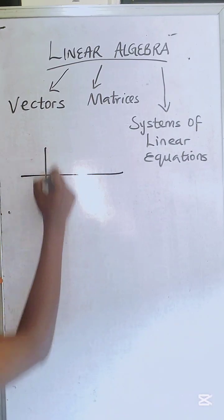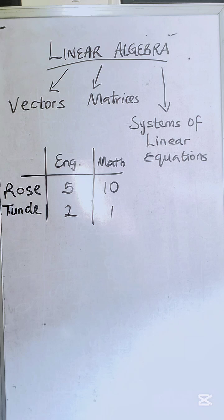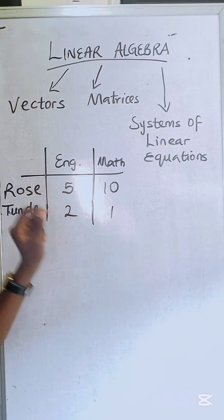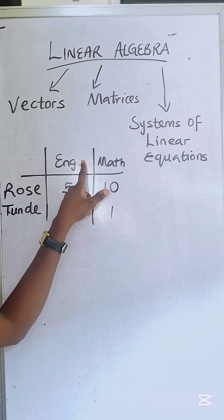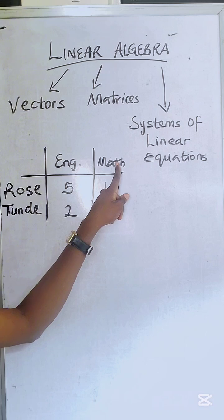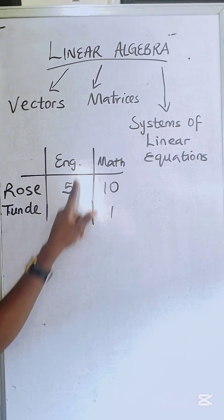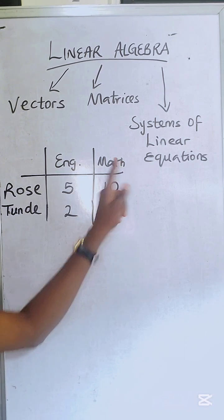So you have a table of numbers. Of course, rows are supposed to score better than Tunde. So let's say Rose scored five in English language and scored ten in math. Tunde scored two in English language, scored one in math.